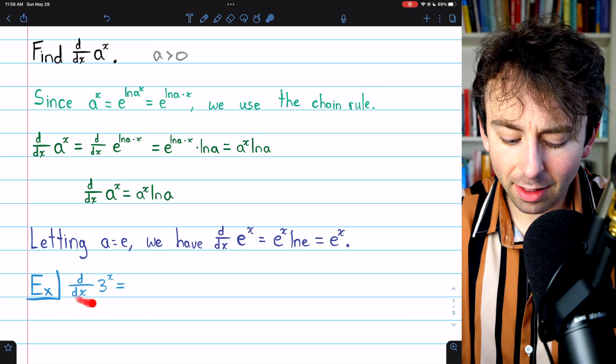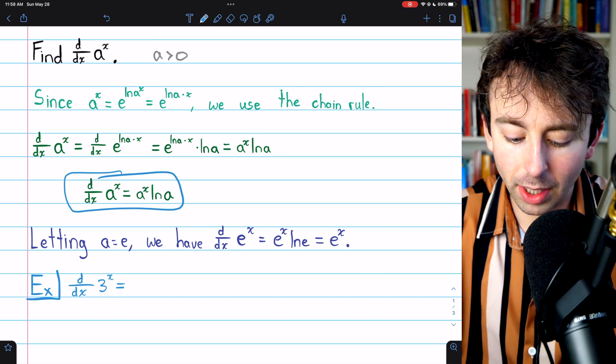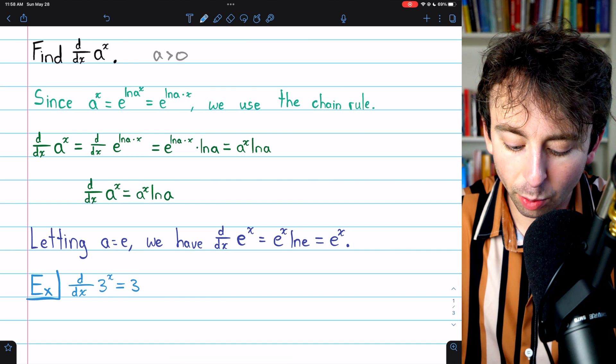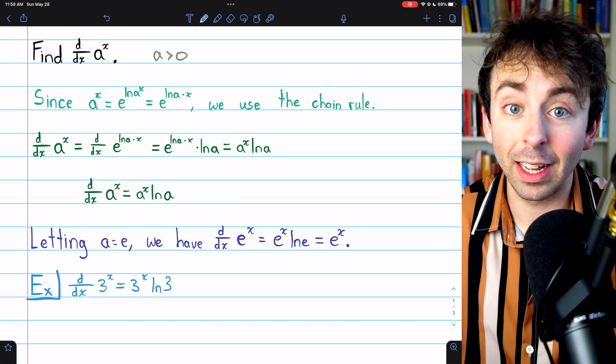For another example, let's take the derivative of 3 to the power of x. By applying this formula we just proved, this derivative is going to be 3 to the power of x times the natural log of 3. That's all there is to it.